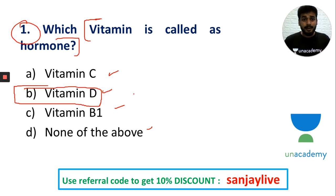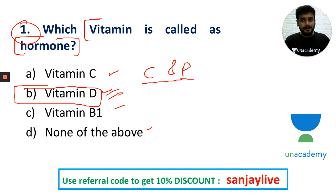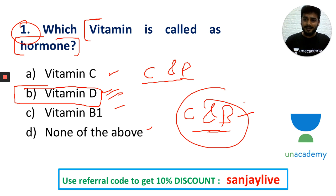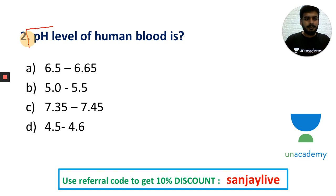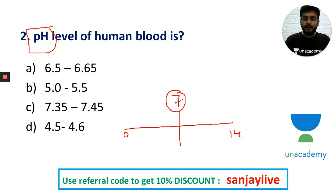Vitamin D hormone maintains calcium and phosphorus levels in the bones. Now, the pH value of human blood — the pH scale ranges from 0 to 14. Seven is neutral. Zero to seven is acidic; seven to fourteen is basic.